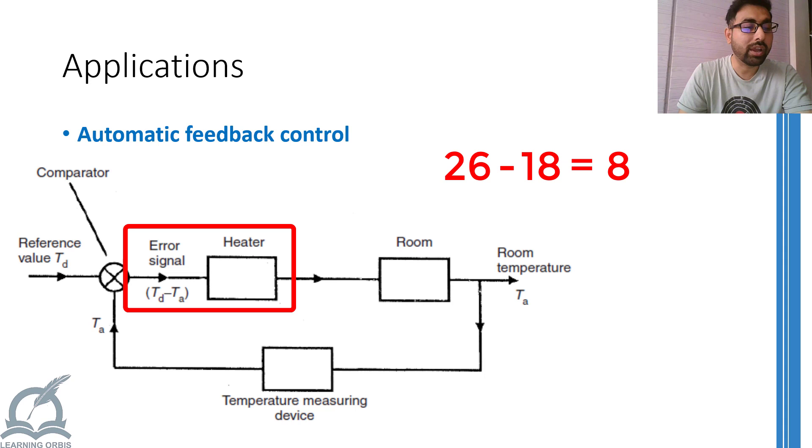The heater will start working because of this difference of 8 degrees Celsius and correspondingly, the room will start to get warmer. As the heater will keep on heating the room, the temperature sensor will keep on measuring the temperature and the difference will be calculated at each moment. Once the room temperature reaches 26, the difference between your selected temperature and the room temperature will reach 0. This 0 error will turn off the heater automatically.